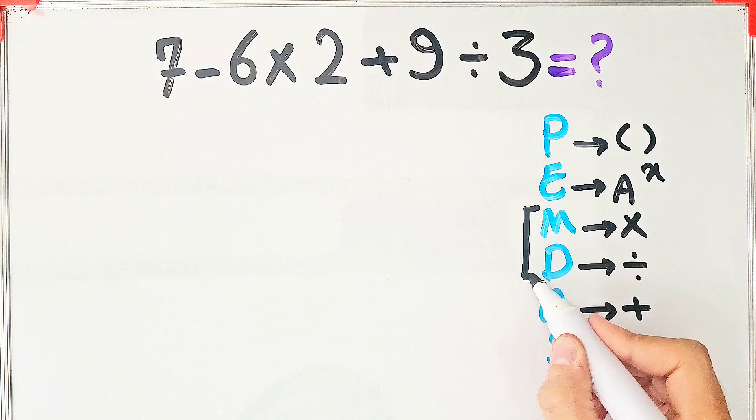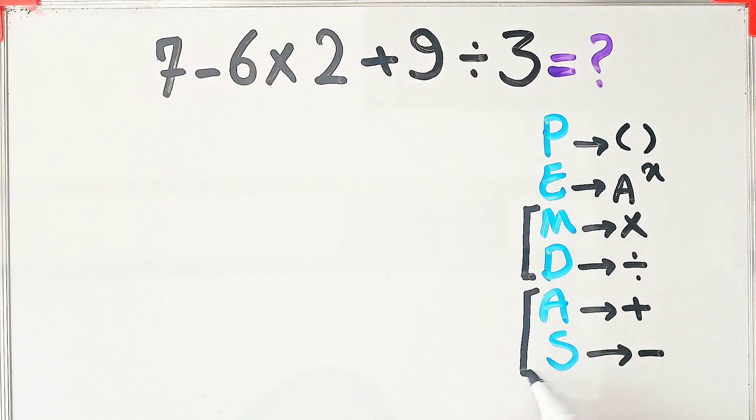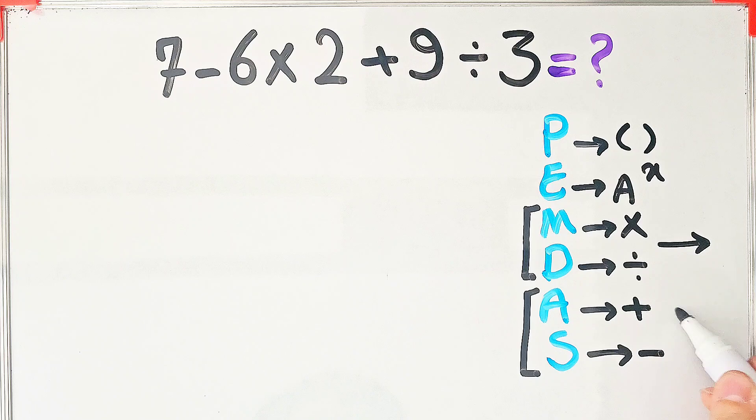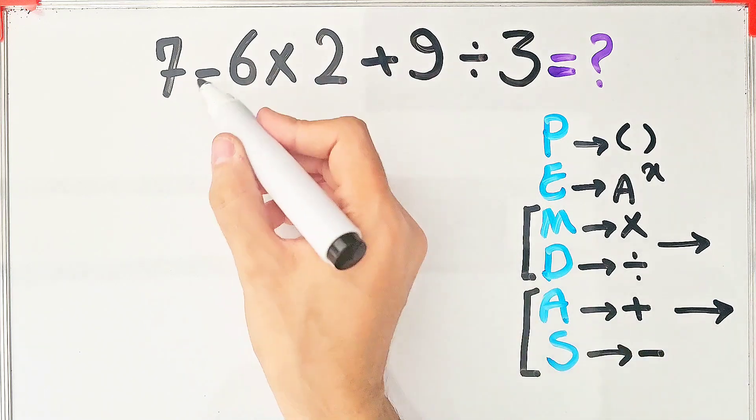The multiplication and division have the same level of priority. Also, addition and subtraction have the same priority. When we have both in an expression, we start from the left and simplify it.